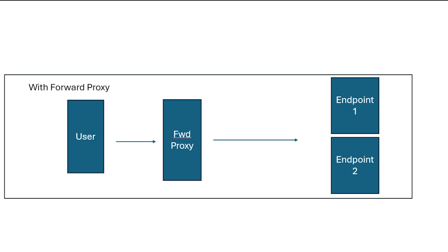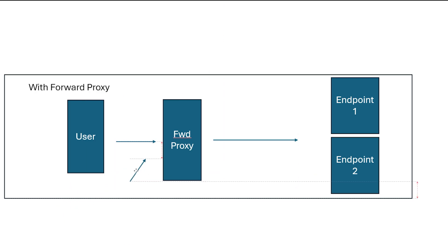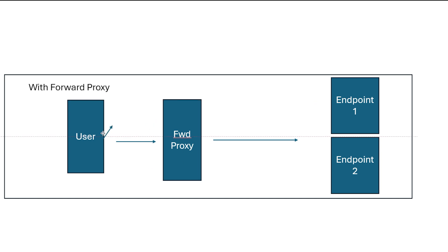But if we move into something called the forward proxy, here's how it actually works. With the forward proxy, we have the user who wants to connect to the cloud provider. In some way — whether it's an agent on the system, a DNS redirect, or something similar — instead of the user going directly to the endpoint, the user is sent to this forward proxy. When the request goes to the forward proxy, it can look at it and say: is the content right? Is the request right? Is what you're trying to do legitimate? Then the forward proxy can reach out to the appropriate cloud provider, and then respond back to the user.